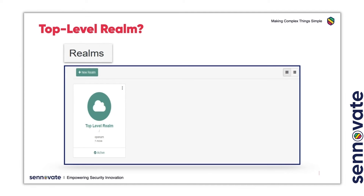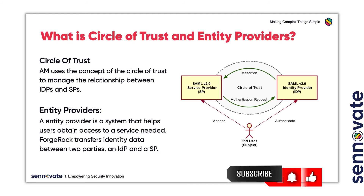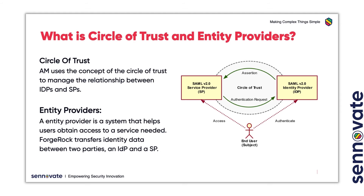Some other important terms you should know are COT, Circle of Trust, and Entity Providers. AM uses the concept of the Circle of Trust to manage the relationship between IDPs and SPs. A Circle of Trust groups at least one identity provider and at least one service provider who agrees to share authentication information.